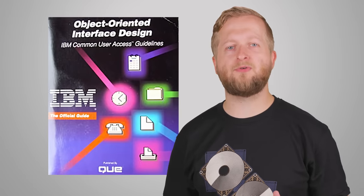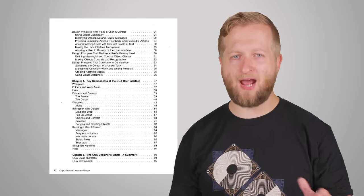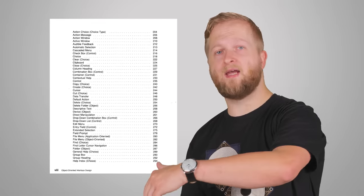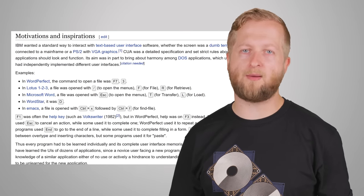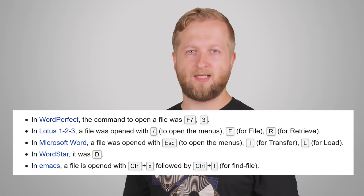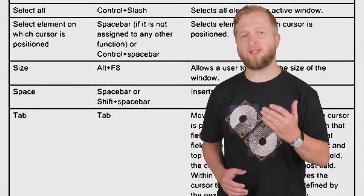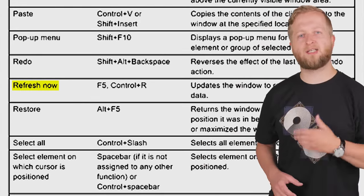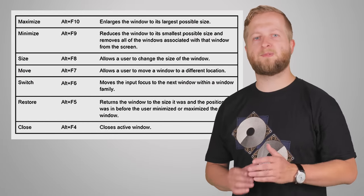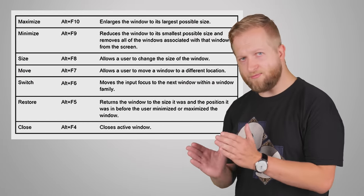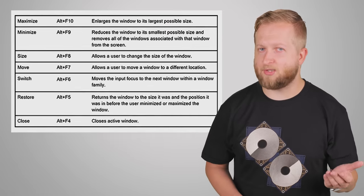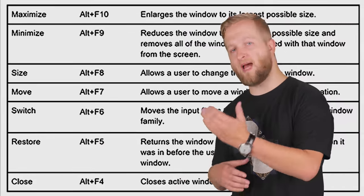The idea was to standardize how a user would interact with software no matter what kind of system or program they were using, as back then different programs had wildly different key combos to accomplish the same task, even among the same class of application such as word processors. Some of the standards are still in use today, such as F5 to refresh a page. The reason Alt-F4 was mapped to the close function was because the designers used other Alt-Function key combos to manipulate windows in different ways, such as Alt-F8 to resize and Alt-F10 to maximize.